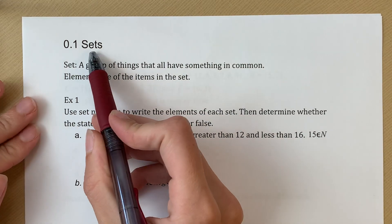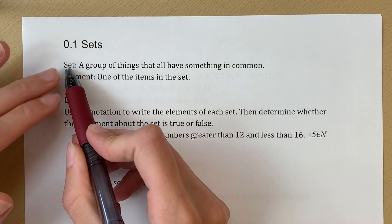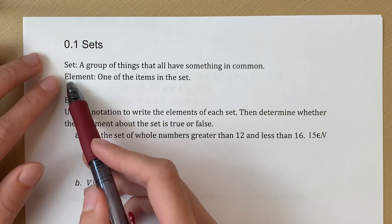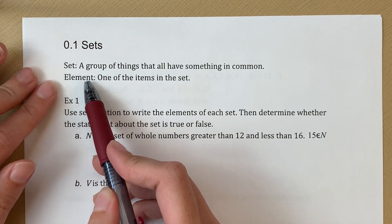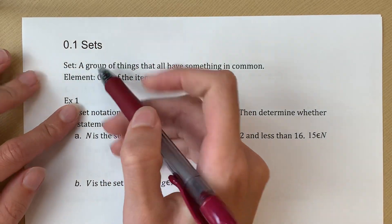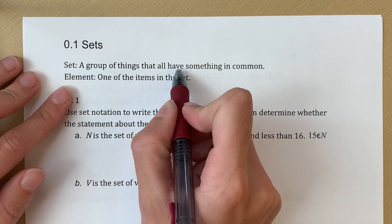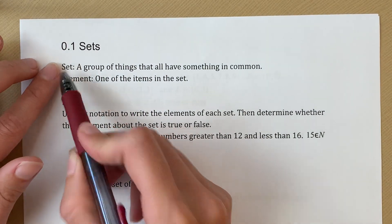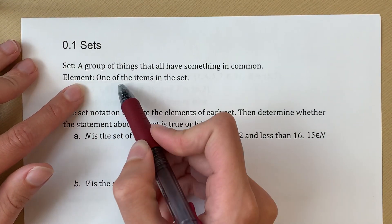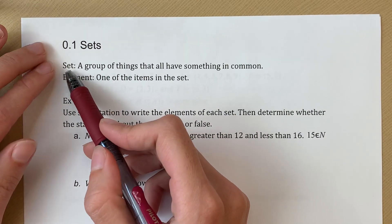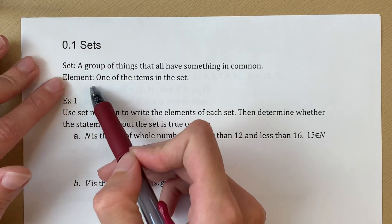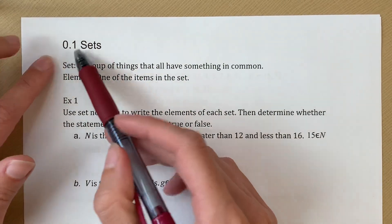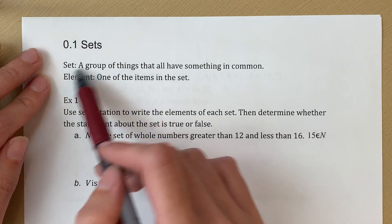Section 0.1 is called sets, and a set is a group of things that all have something in common. An element is another one of our vocab words. It's one of the items in a set. For instance, I could say my set is colors of a rainbow, and then one of the elements in my set colors of the rainbow would be red or orange. Another set could be letters in the alphabet, and an element could be a. We can have lots of different sets and elements. This is just a group. This is a member in the group.